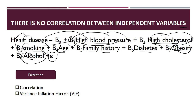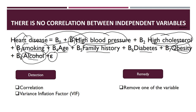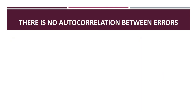The remedy for multicollinearity is to remove one of the correlated variables. Whichever variable has the high Variance Inflation Factor (VIF), remove it from the model and then run the regression again. For example, if smoking and high blood pressure are correlated, remove whichever has the higher VIF.